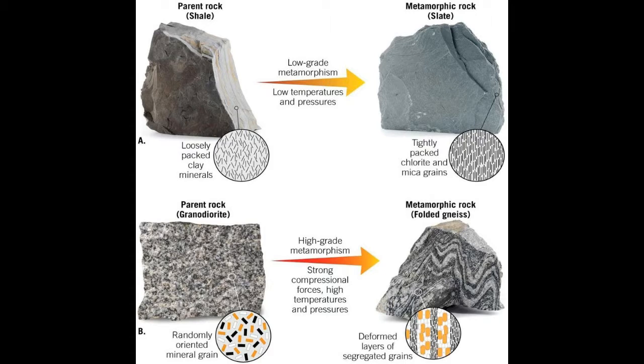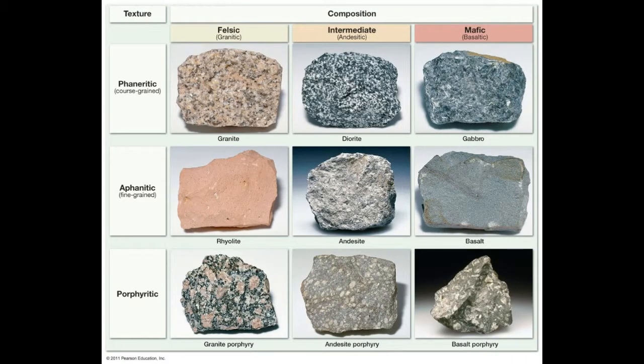A soil's parent material can actually tell you the composition of the soil. It allows you to have a very accurate estimation of what nutrients will be available for plants. For example, a limestone parent material would mean there's a lot of available calcium in that soil, because limestone is calcium carbonate.